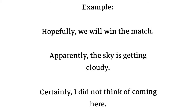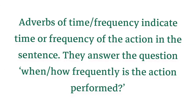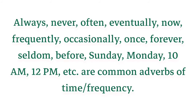Now let us look at adverbs of time or frequency. Adverbs of time and frequency indicate the time or frequency of the action in the sentence. They answer the questions 'when' and 'how frequently is the action performed'. Common adverbs of time and frequency include: always, never, often, eventually, now, frequently, occasionally, once, forever, seldom, before, Sunday, Monday, 10 a.m., 12 p.m., etc.